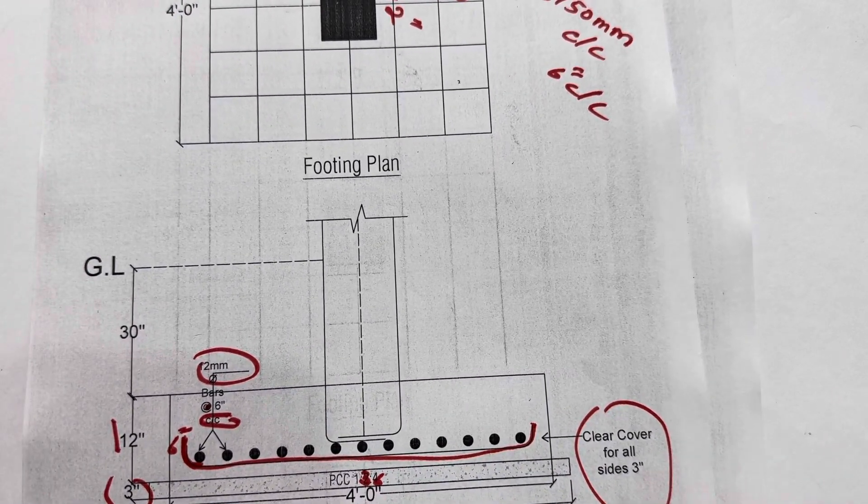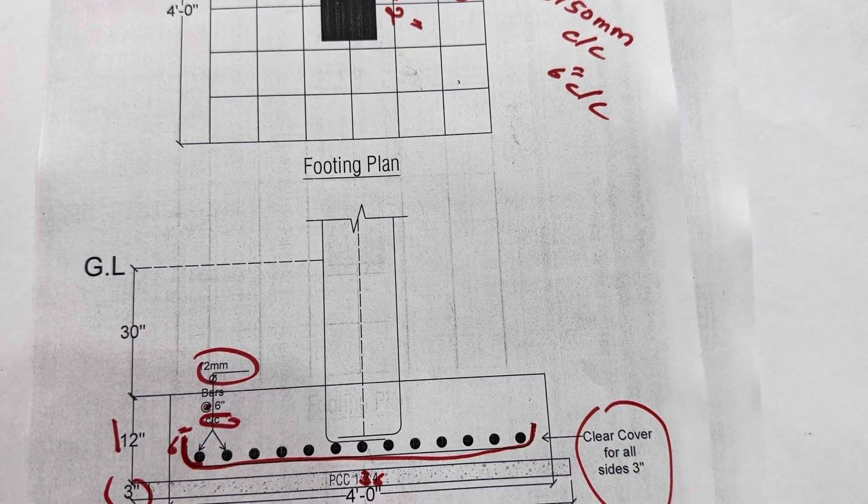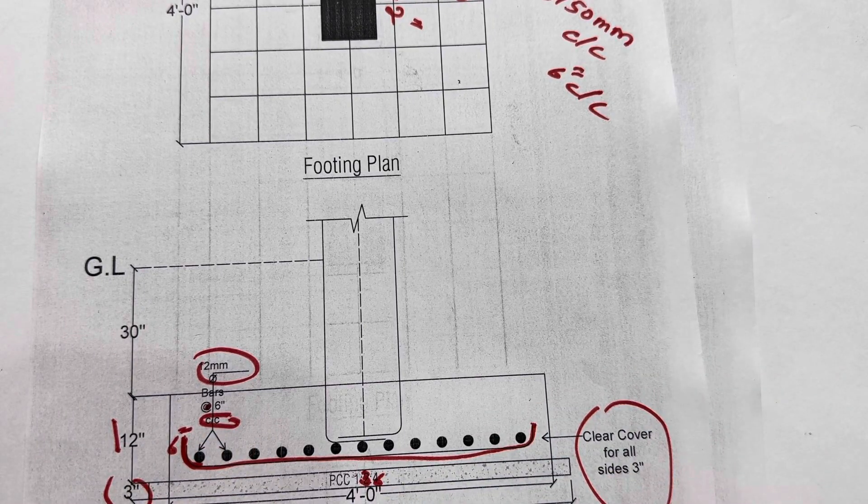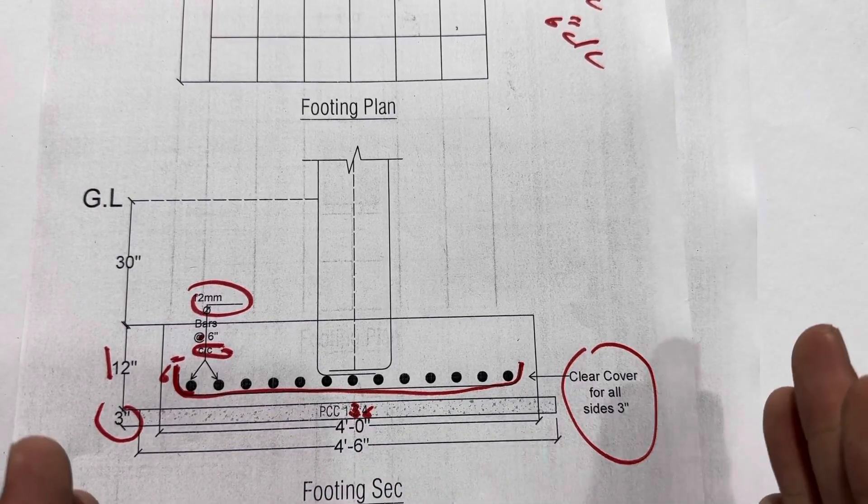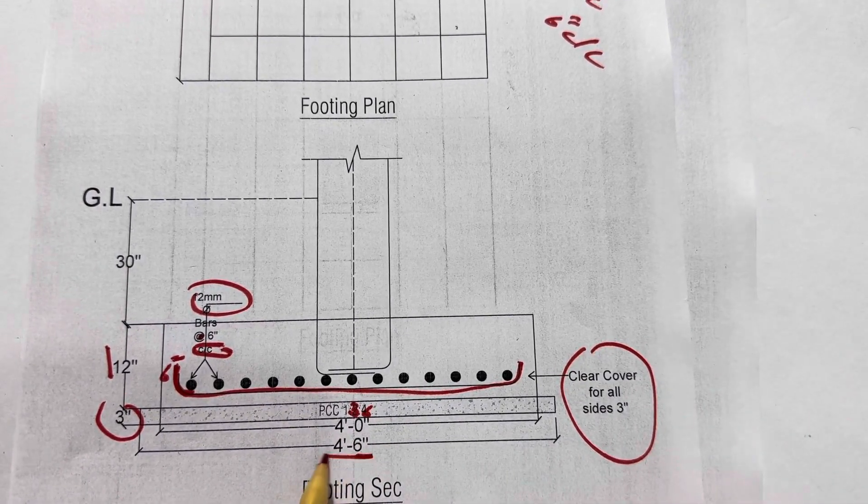Because the steel should be inside the concrete, therefore 75 millimeter concrete cover is best. So 4 feet by 4 feet is the size of the mesh, but the footing size is 4 feet 6 inches.